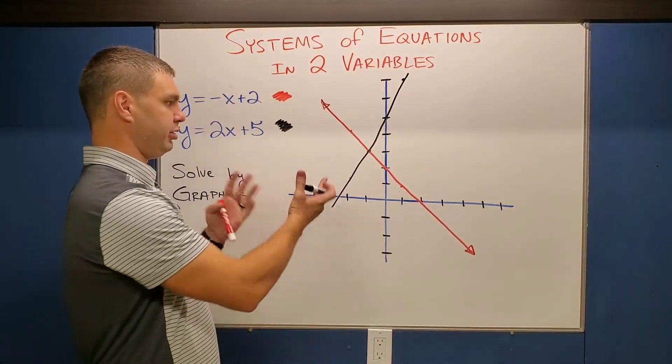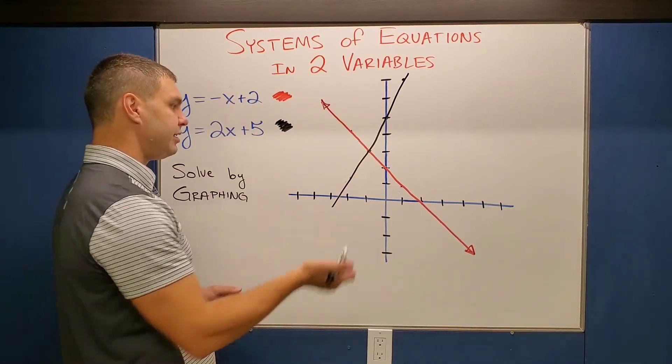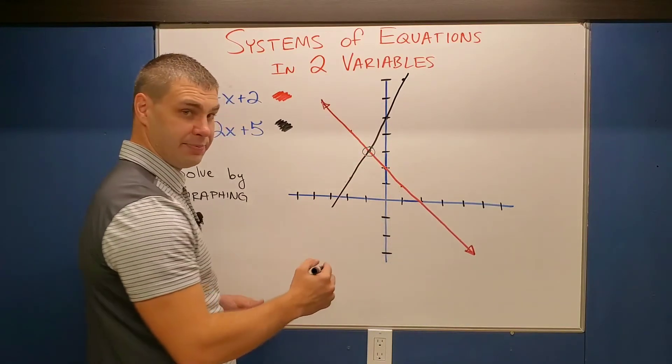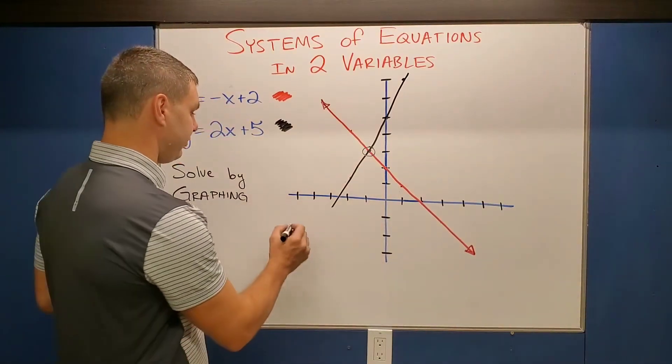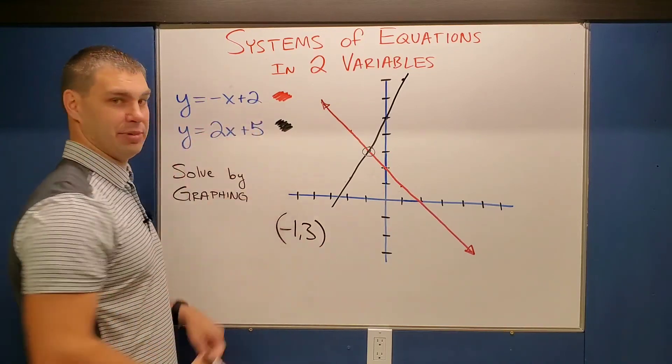So I don't have graph paper, but hopefully you can figure out where that would cross nicely on yours. And this is going to be at this point, which to me looks like it's negative one, three. And so that ordered pair negative one, three is going to be the answer to this system of equations.